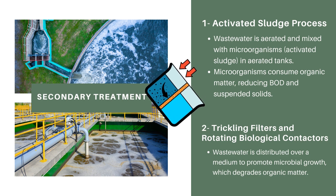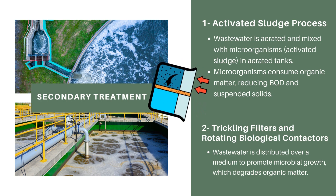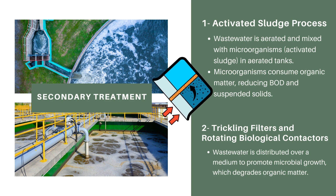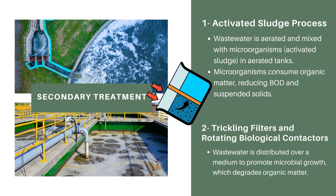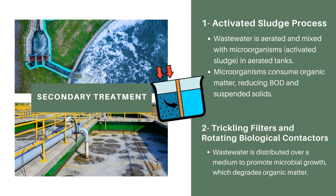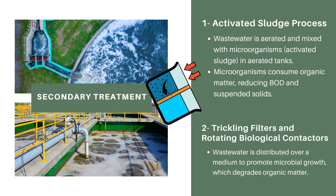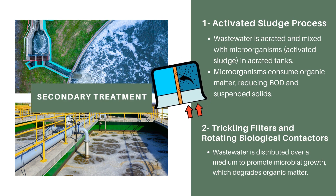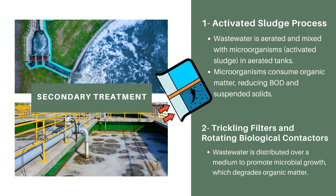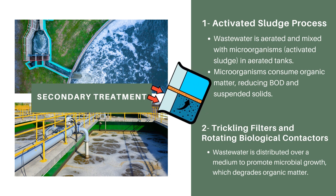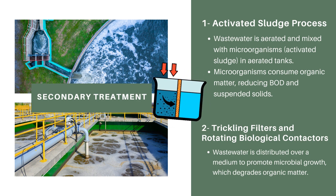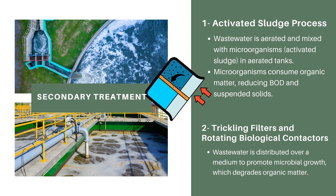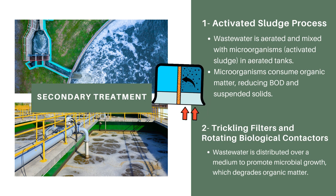Secondary treatment consists of two processes: activated sludge process, and trickling filters with rotating biological contactors. In the activated sludge process, imagine the soup is still a bit lumpy. We add some special helpers — tiny microorganisms, let's call them mini-chefs. These mini-chefs love eating the lumps, the bad stuff in the soup. We mix the soup well and let the mini-chefs do their job, making the soup smoother. In trickling filters and rotating biological contactors, we spread the soup evenly over a special sponge-like material. This sponge has more mini-chefs that eat up the remaining lumps, making the soup even smoother and better.